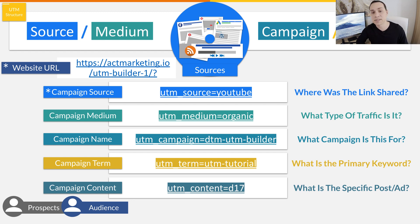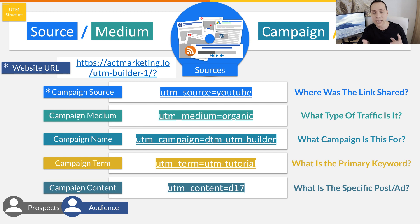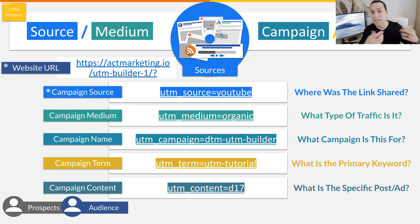Next you have campaign name, which is something you'll come up with yourself — I'll show you the naming convention we use for all of our funnels. Term is something you're pretty much not going to use unless you're doing Google Search Ads, in which case Google does it automatically. And then finally, arguably the most important part: ad content. When you type in a specific code for each one of your videos, blog posts, or ads, that's how you can get so detailed that you know this video is driving revenue or this blog post is getting you email signups.